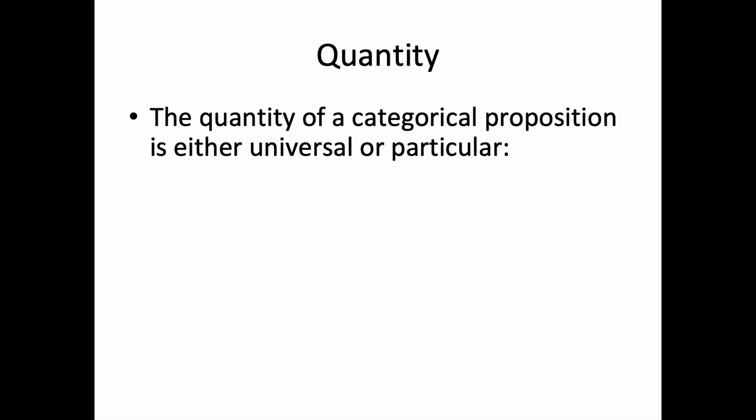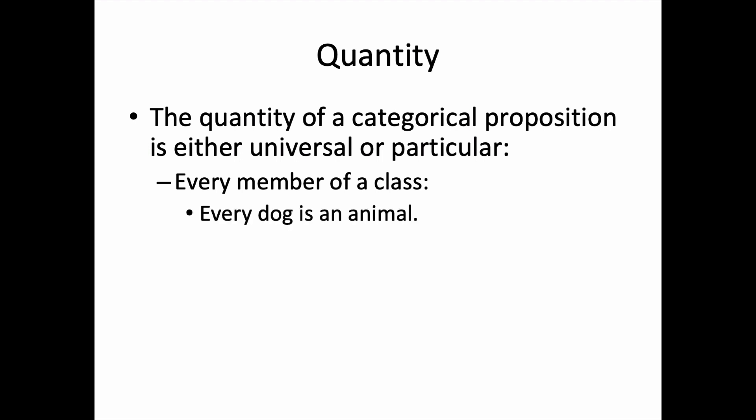Let's begin with quantity. The quantity of a categorical proposition is either universal or particular. The universal quantity involves every member of the class in question, namely the subject class, and, depending on whether we're talking about an affirmative or negative claim, also the predicate class. For example, 'every dog is an animal' has a universal quantifier in the word 'every.' 'All squares are four-sided figures' has the universal quantifier 'all.'